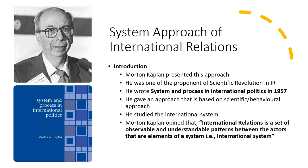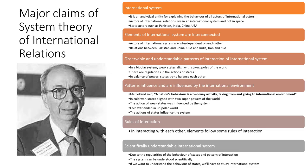This was the main view of Morton Kaplan. He asserted that we should not take knowledge from history; we should abandon the traditional approach and study the international system scientifically. Now let's study the major claims of his system theory of international relations. The first claim was that there is an international system, and this system is an analytical entity for explaining the behavior of all actors of the international system.